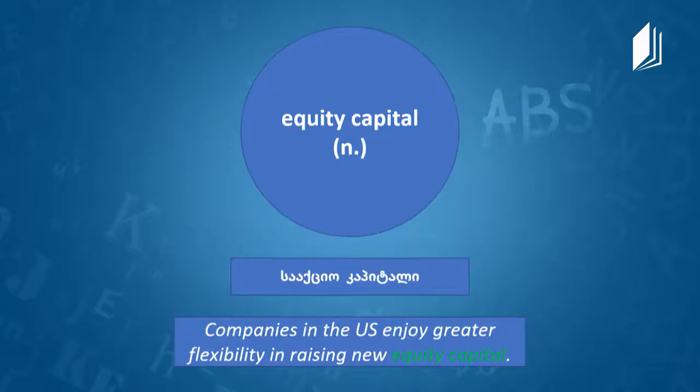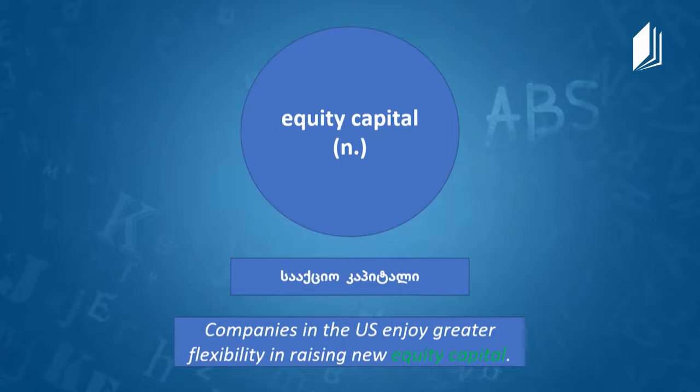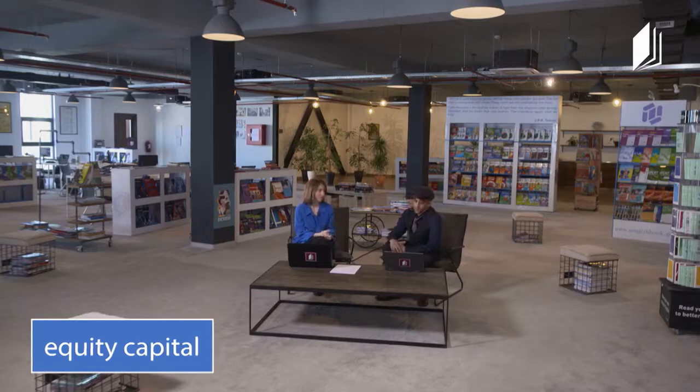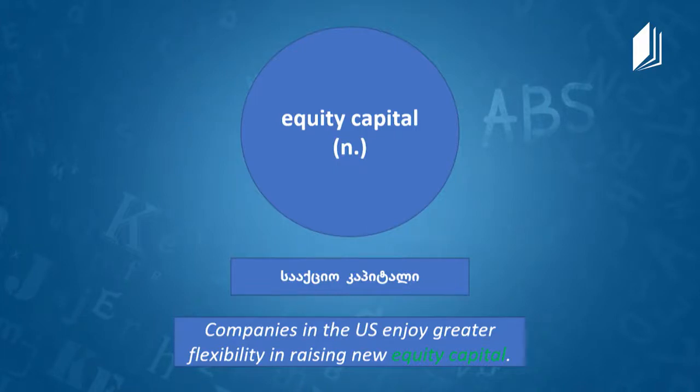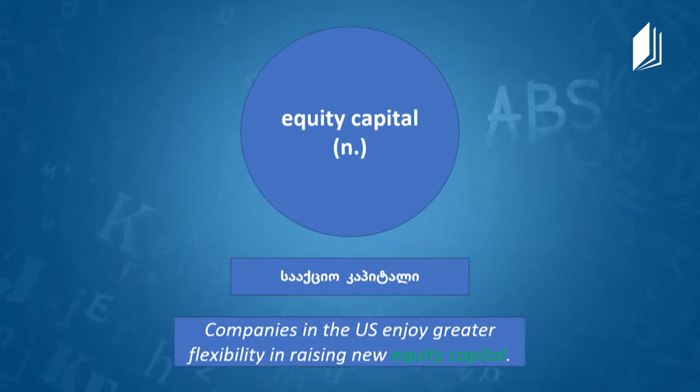The next word is equity capital. It's a noun, and in Georgian it is 'Saktiokapital.' Equity capital is the amount of money that a company gets from selling shares rather than borrowing from a bank. Example: 'Companies in the U.S. enjoy greater flexibility in raising new equity capital.'